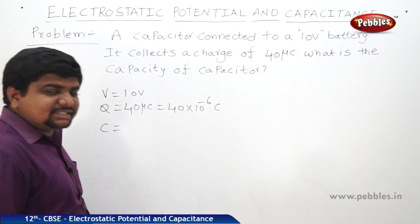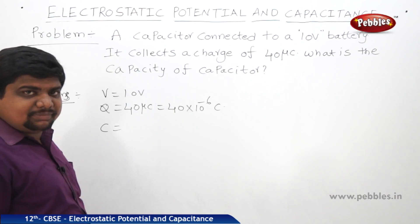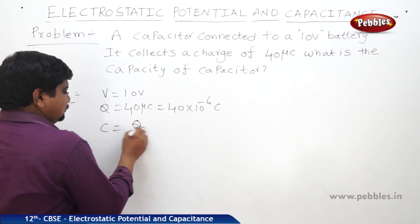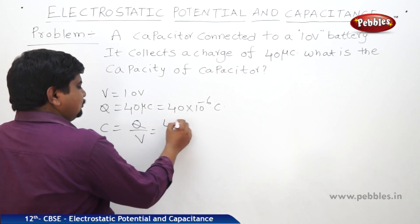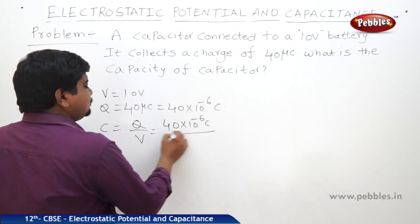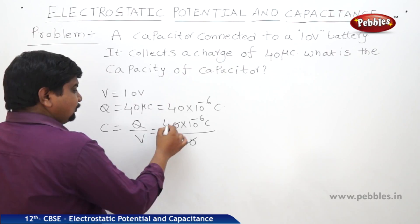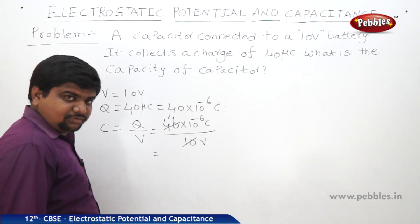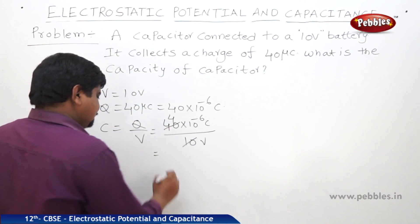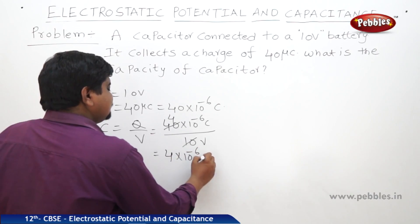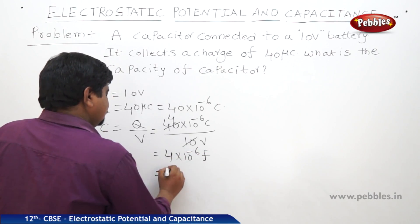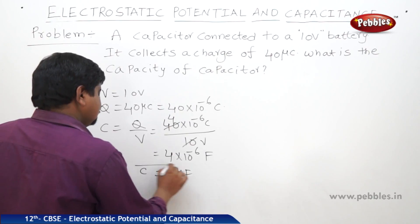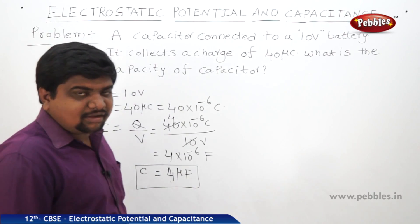The formula for capacitance is C = q/v. Substituting: q = 40 × 10⁻⁶ coulombs and v = 10 volts. This gives C = 40 × 10⁻⁶ divided by 10, which equals 4 × 10⁻⁶ farads — that is 4 microfarads. This is the capacitance of the capacitor.